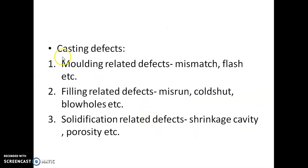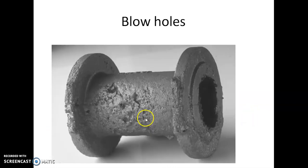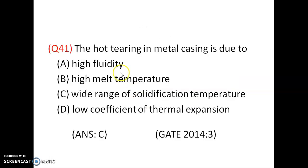Casting defects are classified as: molding-related defects (mismatch, flash), filling-related defects (misrun, cold shed, blow holes), and solidification-related defects (shrinkage cavity, porosity). Blow holes are formed due to low permeability of the sand mold.